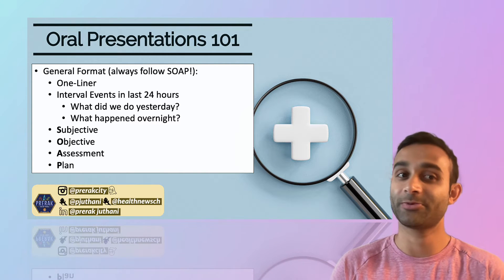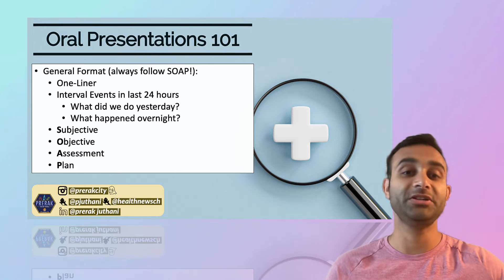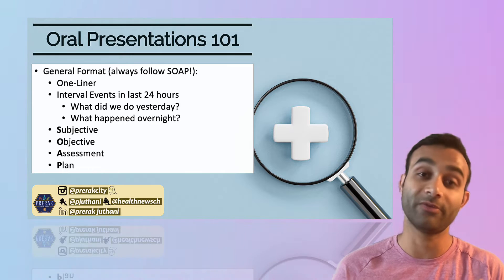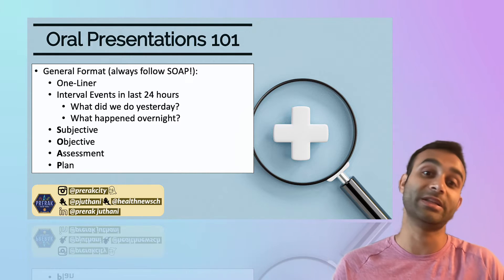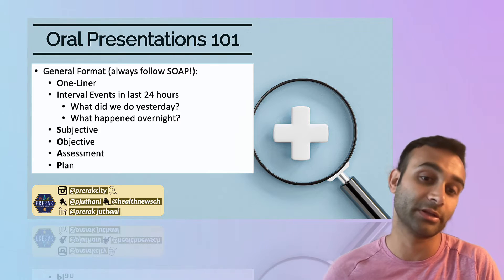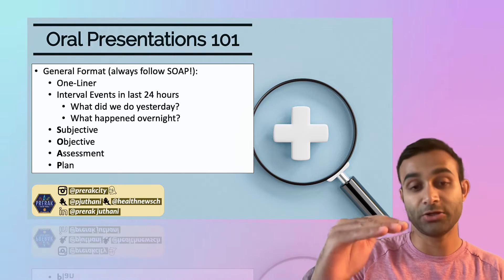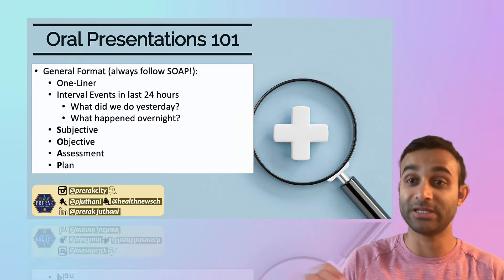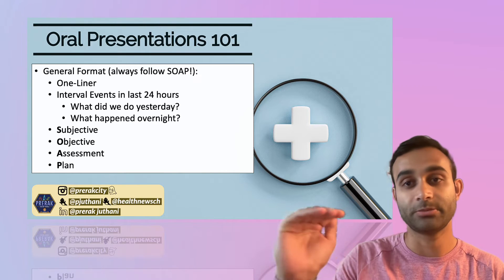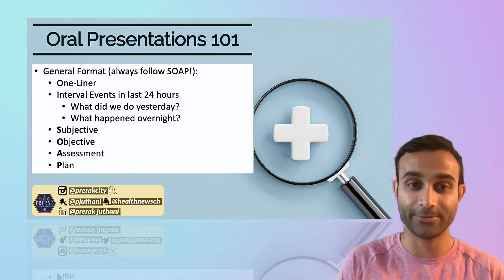Unfortunately, in the hospital, things that we do to patients can be very relevant to how their course ends up. So if, for example, we diuresed the patient yesterday, you want to see how much volume they put out and make sure their electrolytes are okay. And then I usually like to go into a presentation using the SOAP format — S-O-A-P: Subjective, Objective, Assessment, and Plan — and I'm going to break all of these down for you.